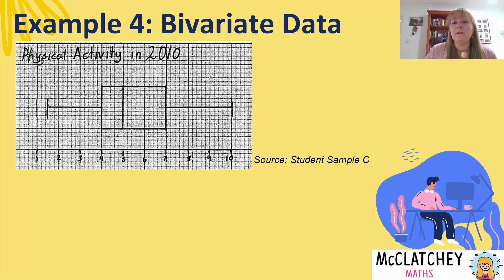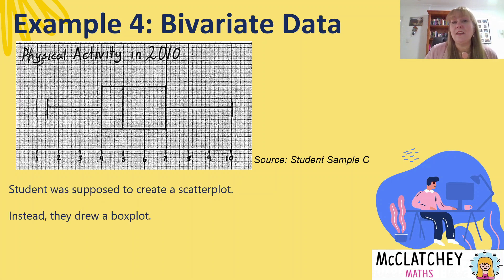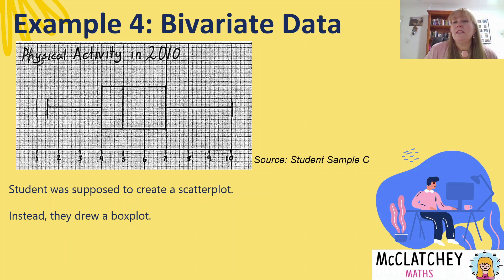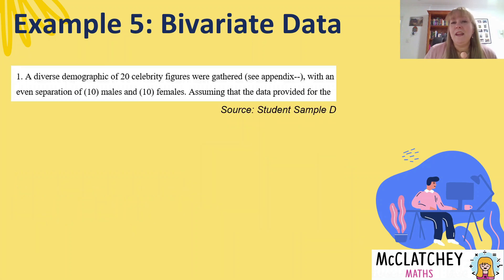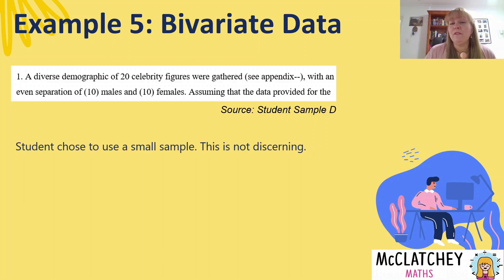Another bivariate data example: instead of drawing a scatterplot, this student created a box plot — representing the data in an incorrect way, using a simplistic approach instead of a more complex one. Therefore it's not a discerning choice. Student D also used a bivariate data example but collected data from a very small sample of only 20 figures. That's quite a small sample and is not a discerning choice, so they could be marked down on this part.